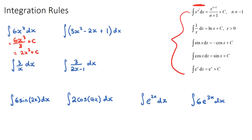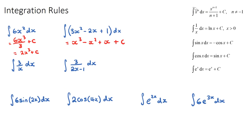If you see an integral where we have terms that have been added or subtracted, we just integrate each of them individually. Integrating 3x squared gives 3x cubed over 3 — the 3s cancel to give x cubed. Then minus 2x becomes 2x squared over 2, which simplifies to x squared. Integrating the constant 1 just becomes x, and then we have our plus c. That's our polynomial rule.